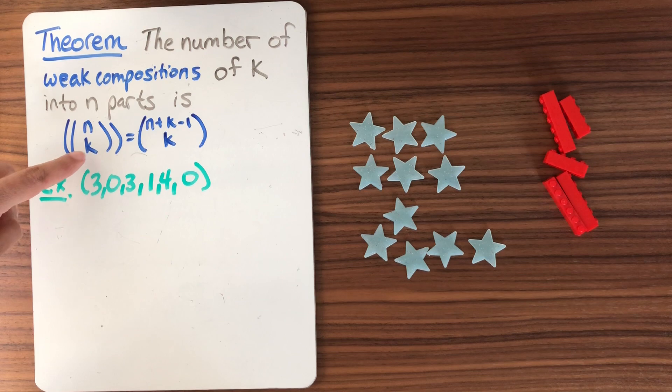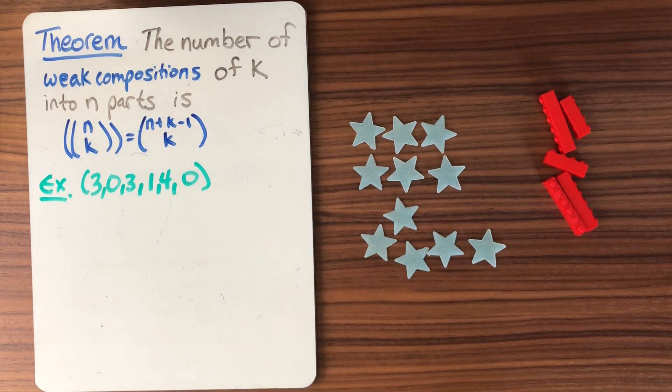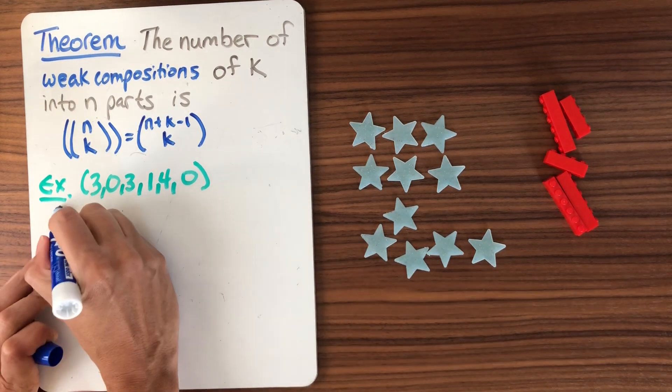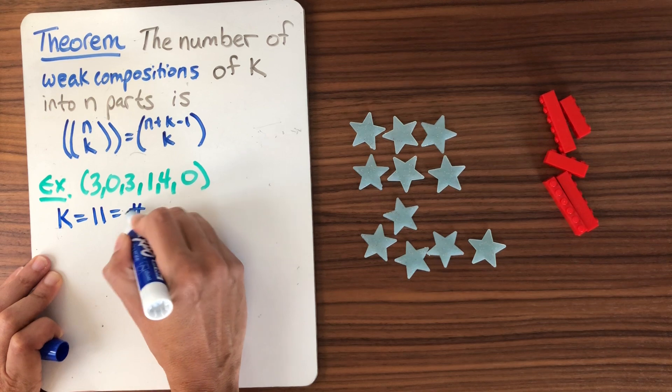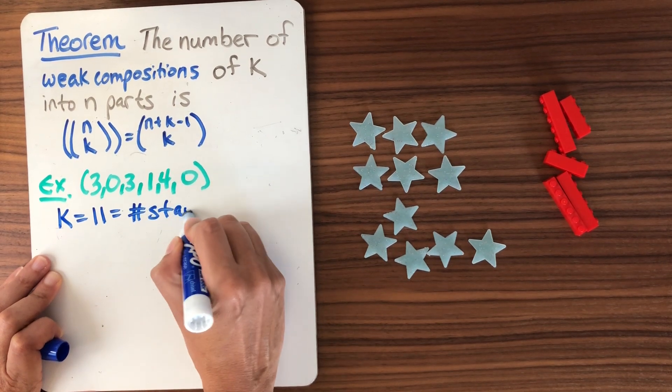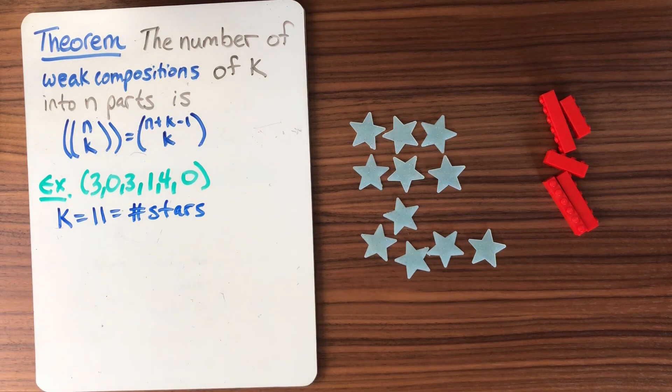then I'm going to have k is going to tell me my number of stars, right? This adds up to 11. So I'm going to have that k, which in this case is 11, is going to equal the number of stars. So you can check that I have 11 stars.